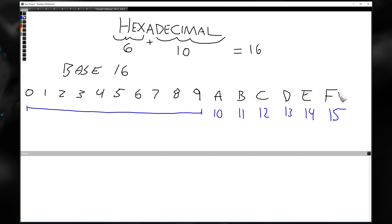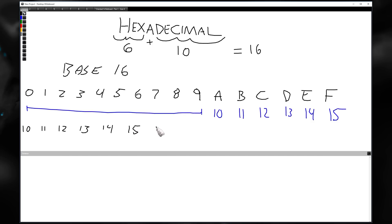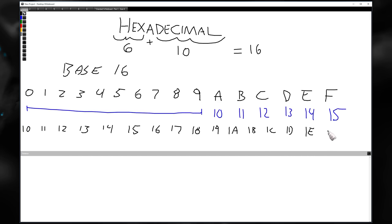Where do we go from F in hexadecimal? If we want to go above F, you start with 10, then 11, 12, 13 — this is where your brain is going to absolutely melt — 14, 15, 16, 17, 18, 19. Do you go to 20? No. You go 1A, 1B, 1C, 1D, 1E, and then 1F.